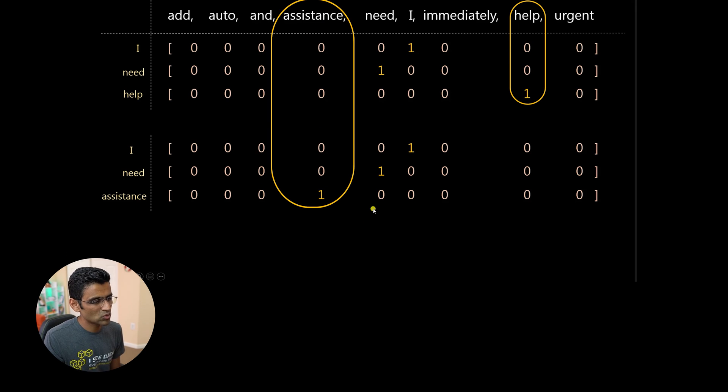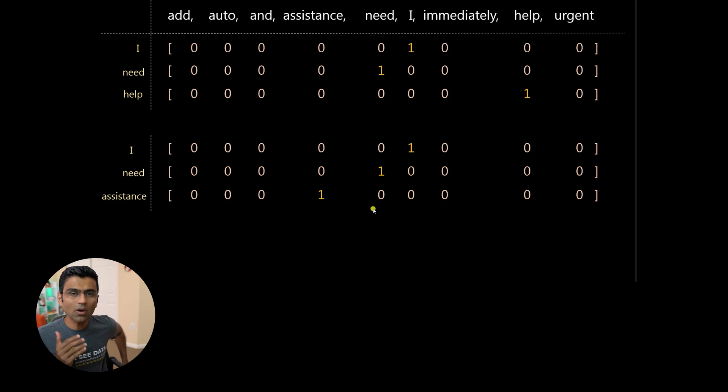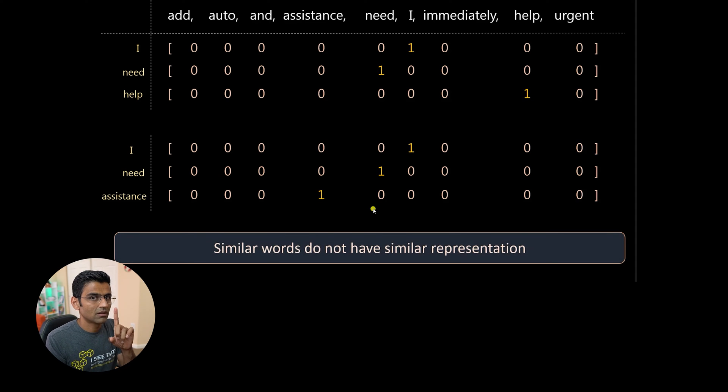Just by looking at these two vectors, you can't say that they are similar words. So one hot encoding doesn't capture the meaning of the word in an accurate way. So that's the disadvantage number one.